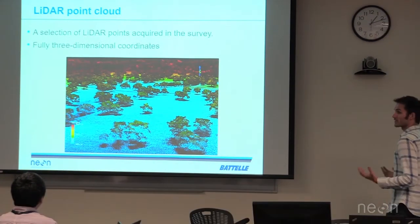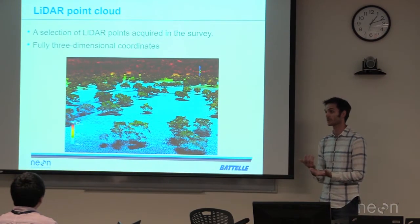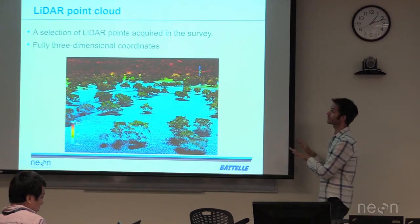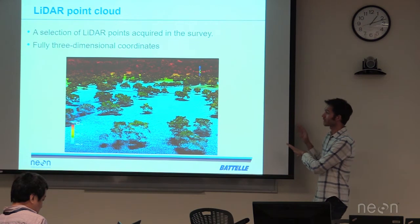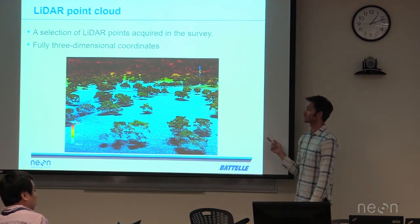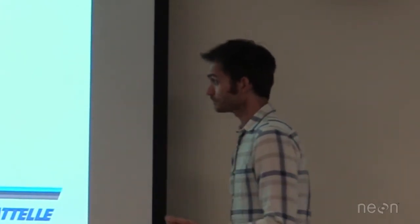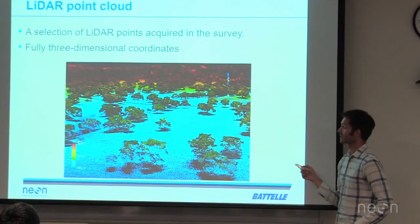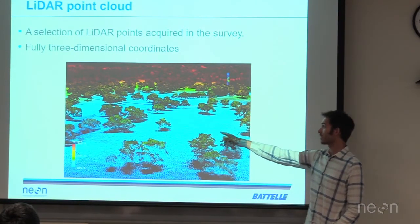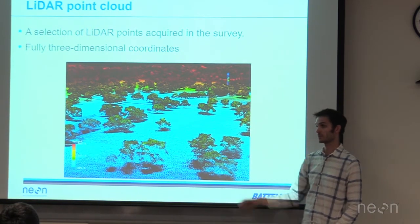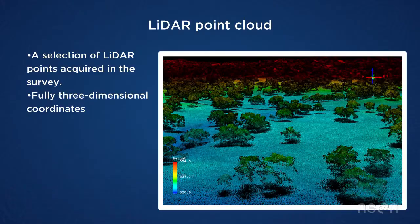Once we have the trajectory, we mix it with the range and scanning information collected by the LiDAR sensor to produce a point cloud. This is an example of our L1 product — point clouds produced in LAS format, which is a standard binary format for exchange of LiDAR point clouds. This example from the San Joaquin Experimental Range shows all the individual points collected by the LiDAR, and you can even make out the structure of the vegetation in those individual points.